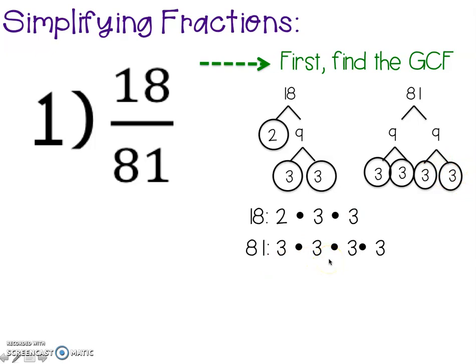Now we need to look at our prime factorization lists and see what they share. Looking at the list, I first see that they don't share a 2, but they do share a 3. Remember, they don't have to be right on top of each other. It just has to be that 18 has a 3 and 81 has a 3.